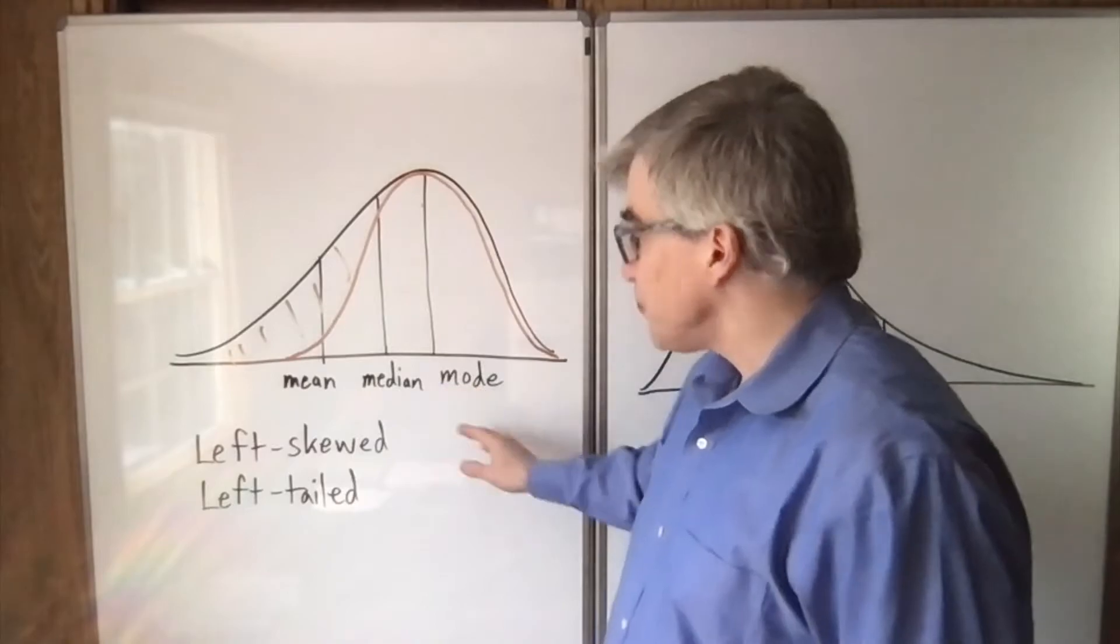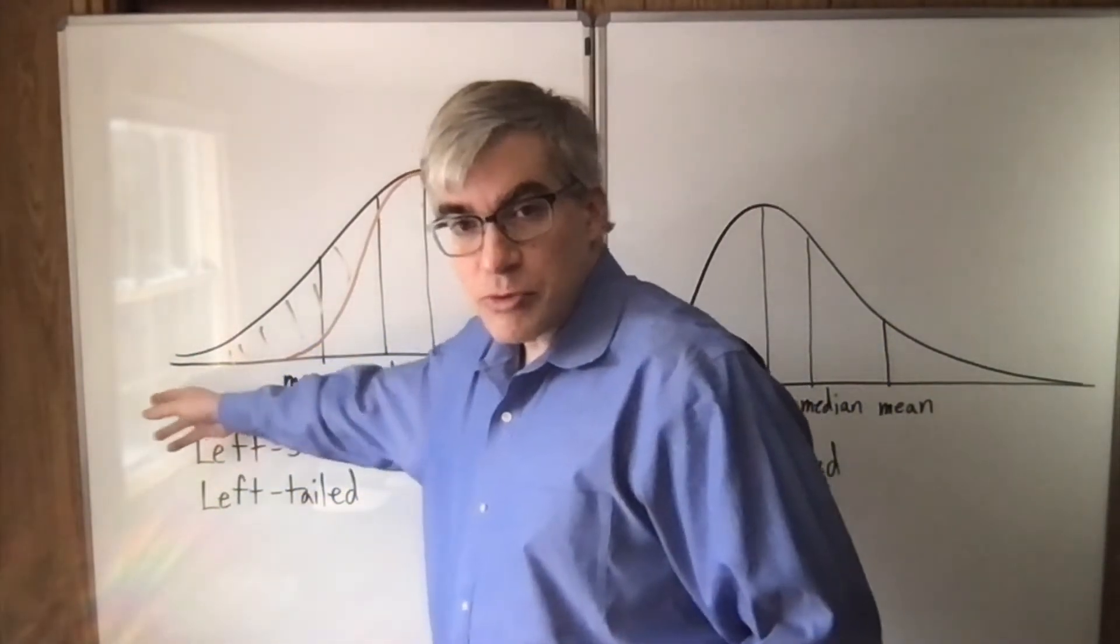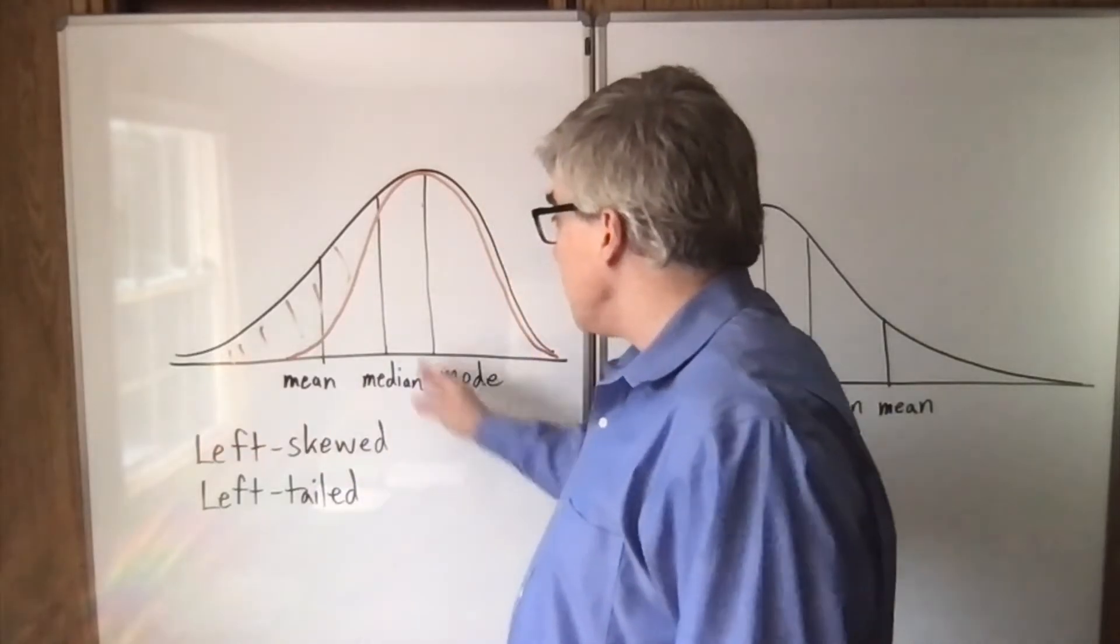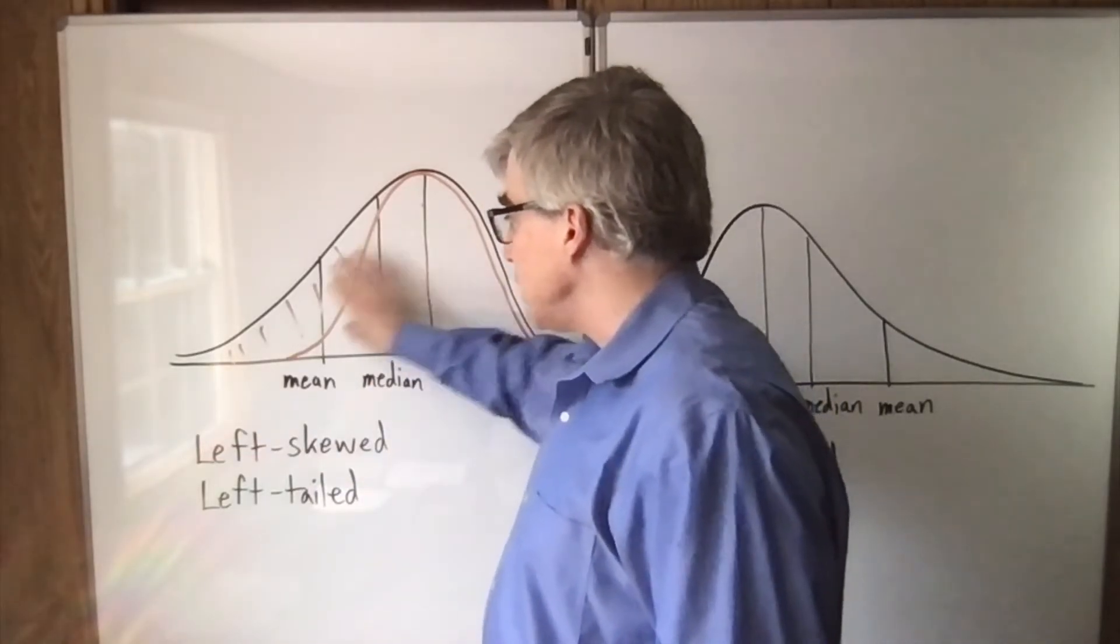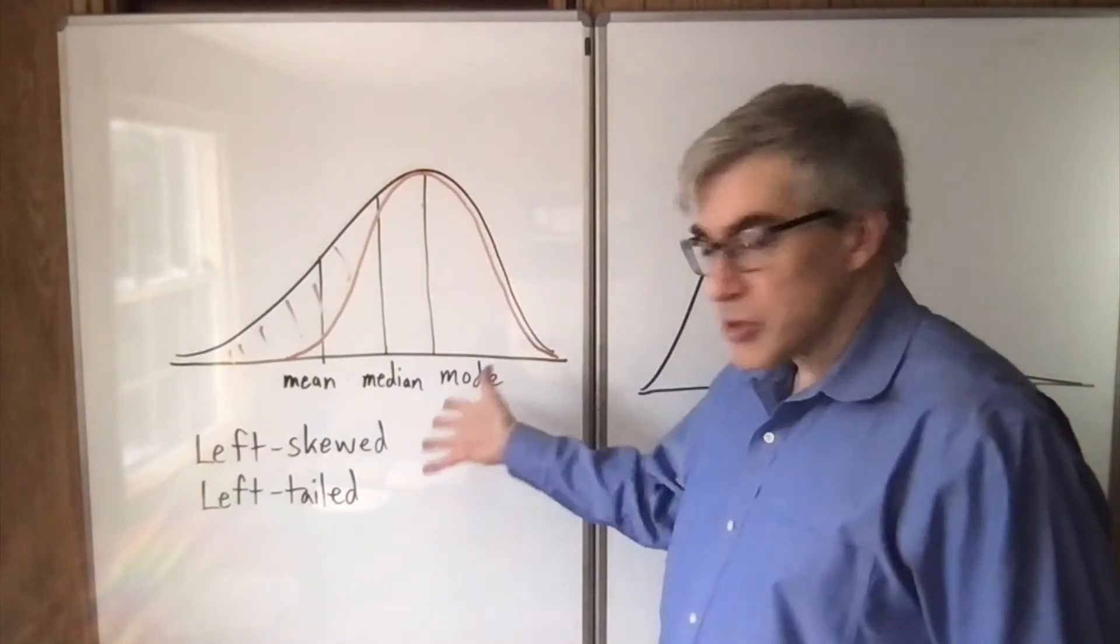The mode is the highest value. The mean is shifted well to the left because low values will shift it a lot. The median is the point where you have 50% of the area to the right, 50% of the area to the left. So that's how you can remember left skewed.